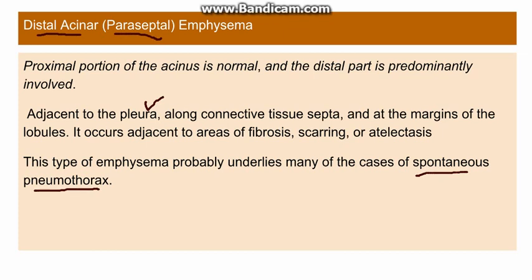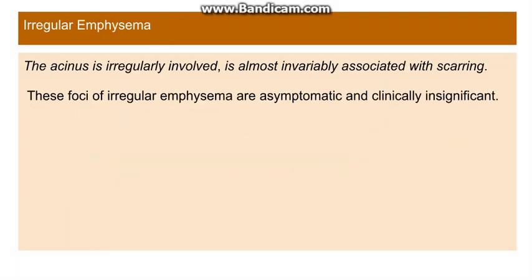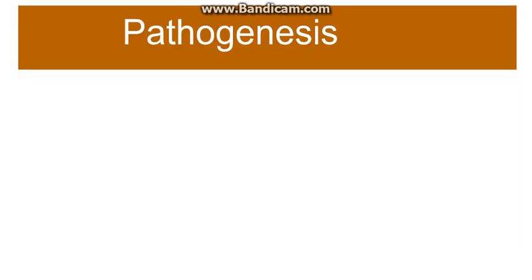The fourth type is irregular emphysema. The acinus is irregularly involved and is mostly associated with scarring. This type is mostly asymptomatic and clinically insignificant — so insignificant that it is the most common post-mortem finding.